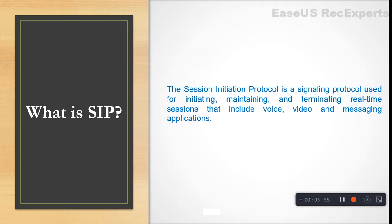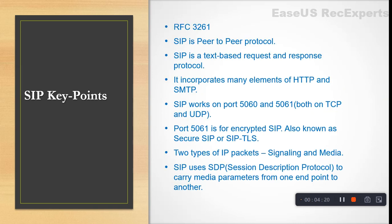SIP is similar to other call signaling protocols like MGCP and H.323, but the key difference is that MGCP is a client-server protocol, whereas SIP is a peer-to-peer protocol. It does not have any dependency on a call manager server — it's completely independent with its own mechanism for handling signaling and media. Some key points: SIP is defined in RFC 3261, and it is a peer-to-peer protocol.